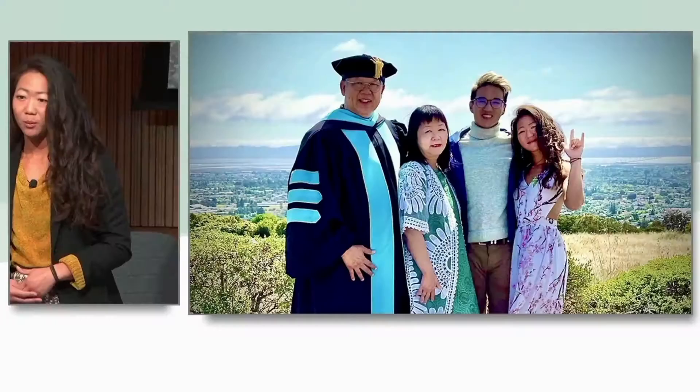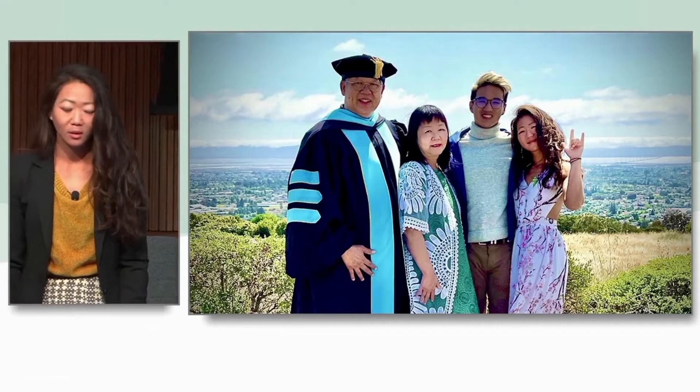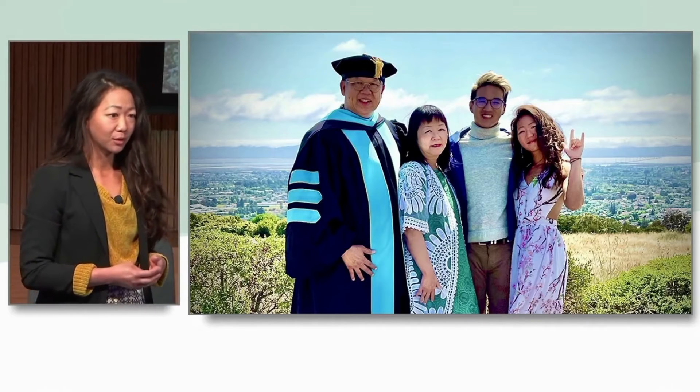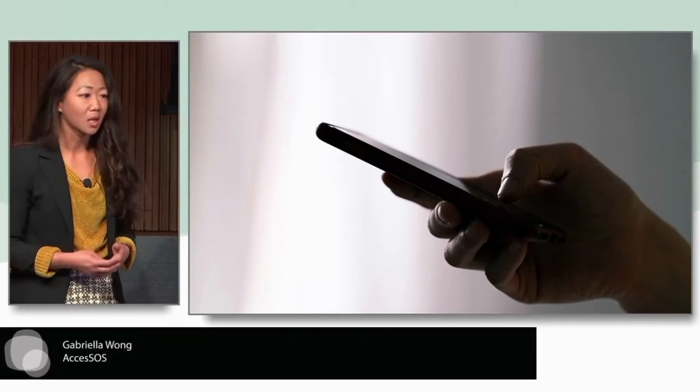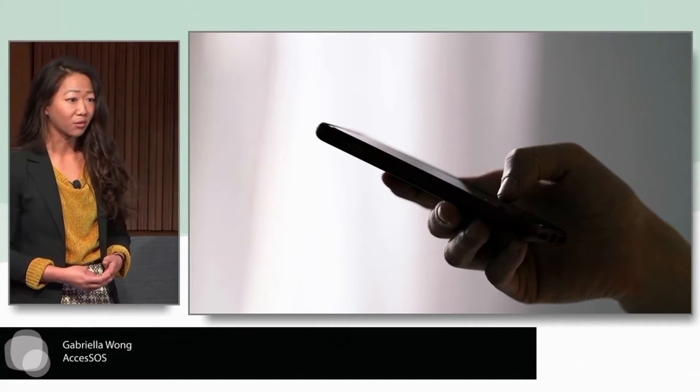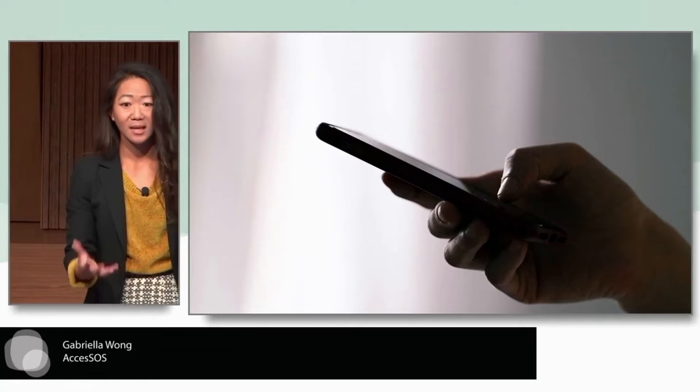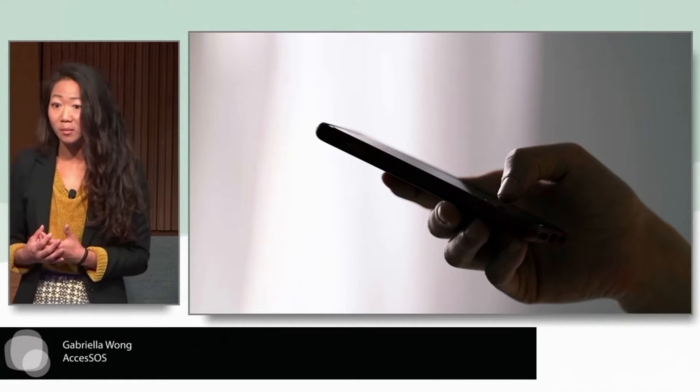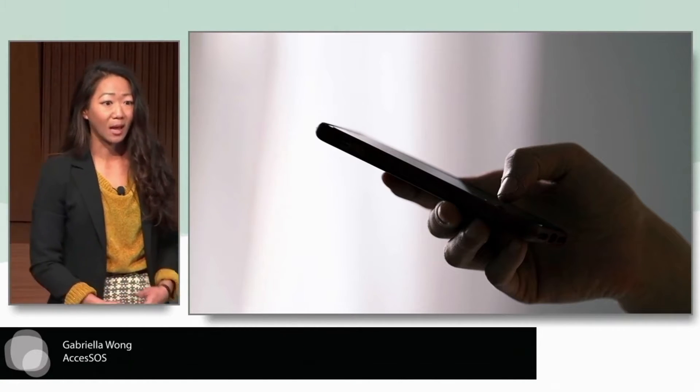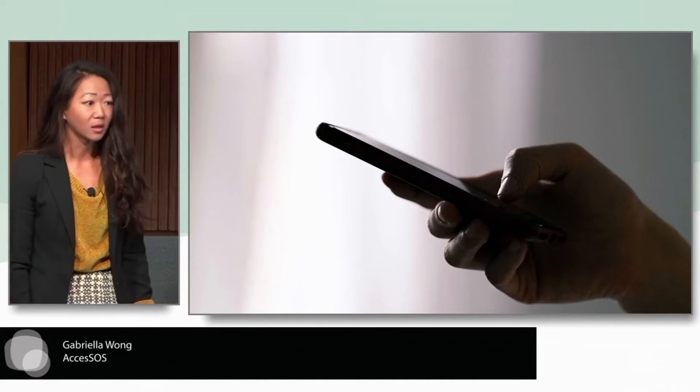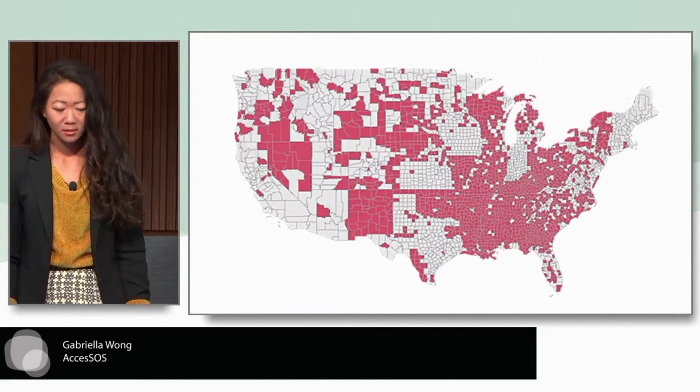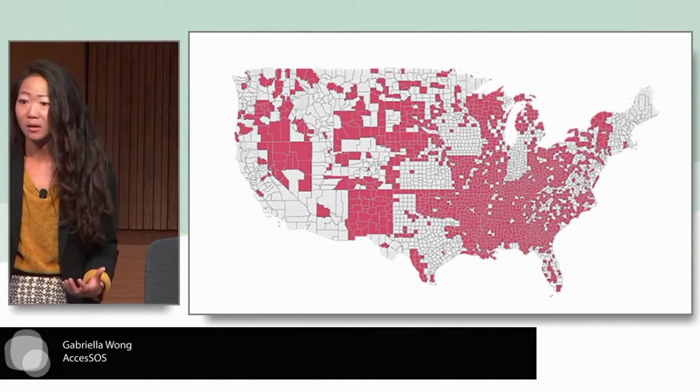A few years ago when my father was home alone, his gallbladder ruptured. As a deaf man he was not able to call 9-1-1 for help. He texted me to call 9-1-1 for him, but I was not near my phone at that time. As his daughter, this really affected me. Why couldn't my dad text 9-1-1 directly?